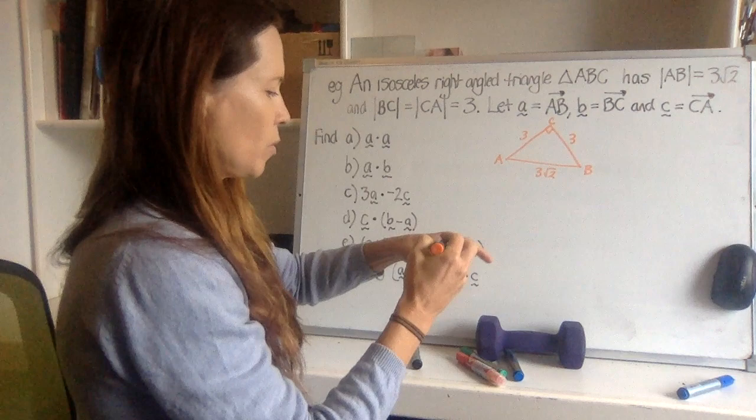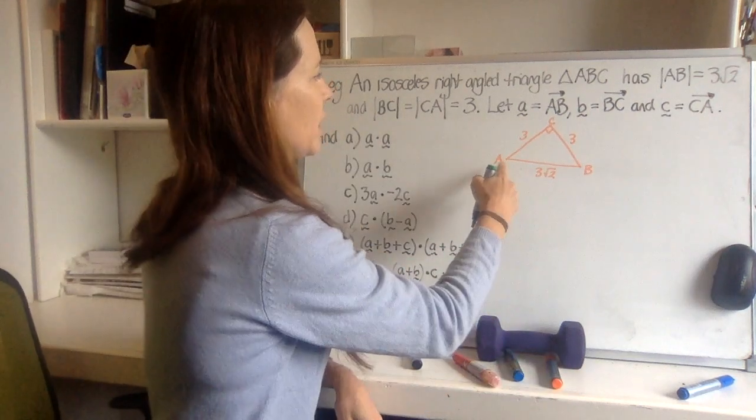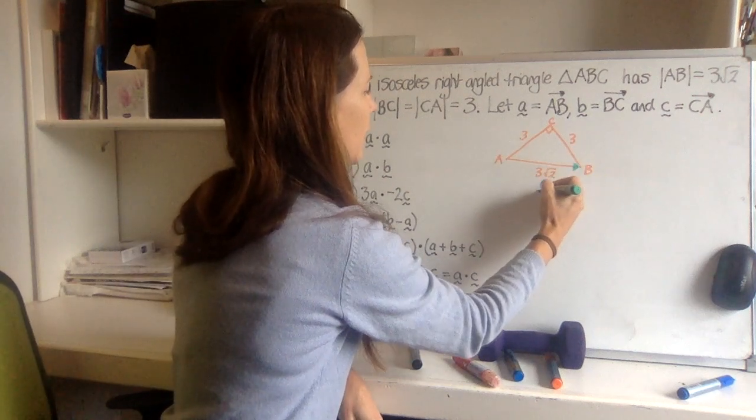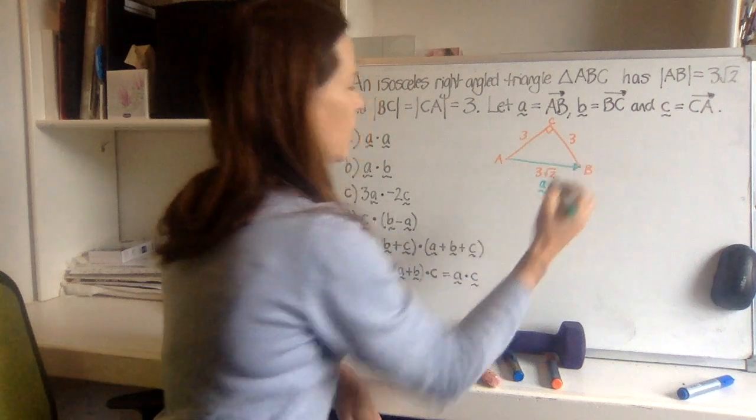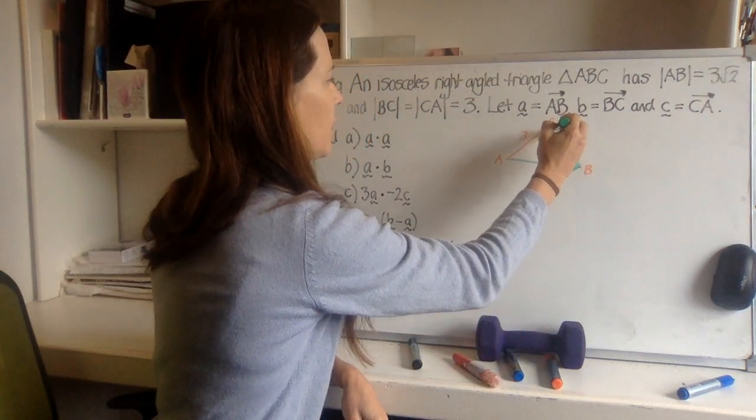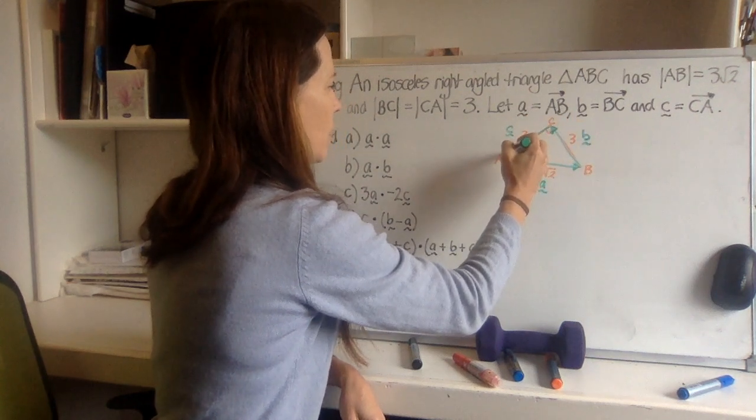So BC and CA are both 3. Alright, so we've got, we'll put the vectors in a different colour. So let A, vector A be here. So this is vector A going this way. And vector B is here, going in this direction. And vector C is over here, going in this direction.